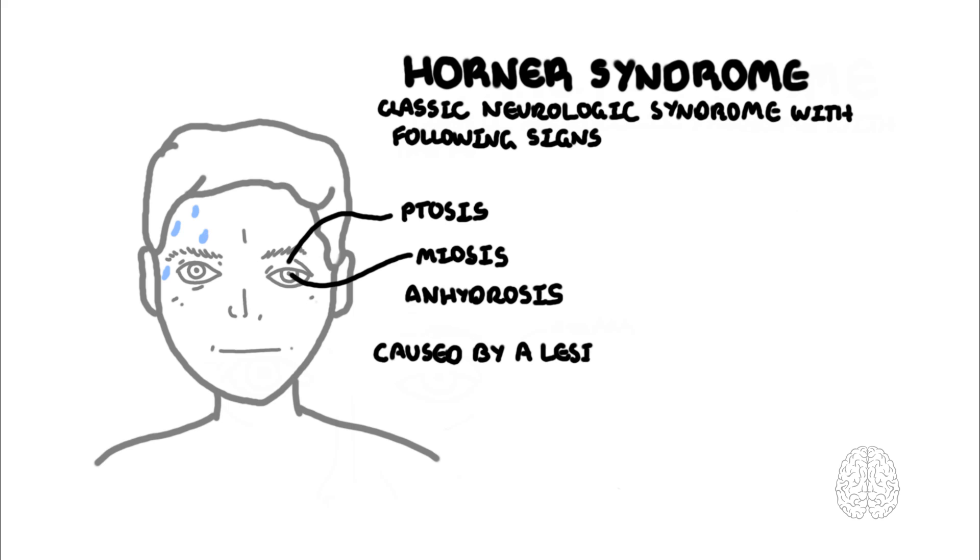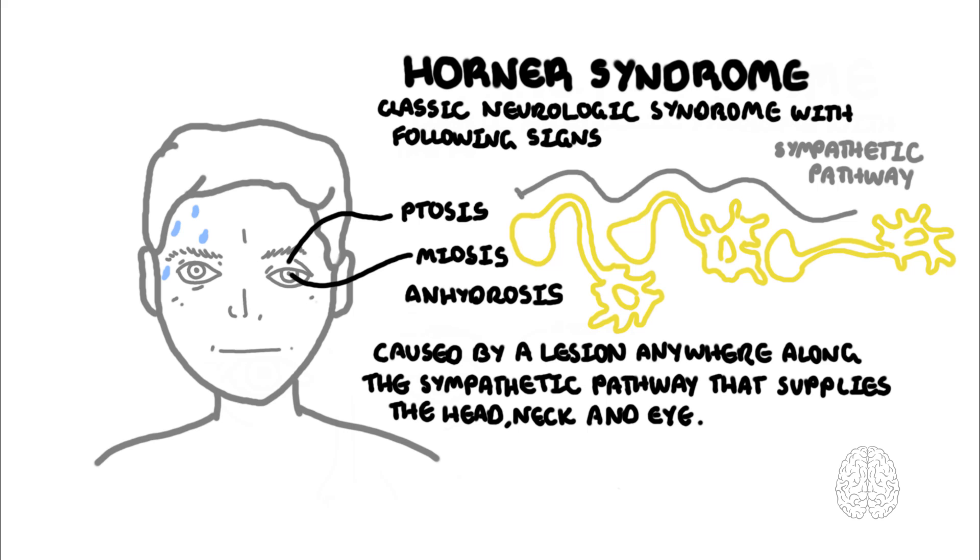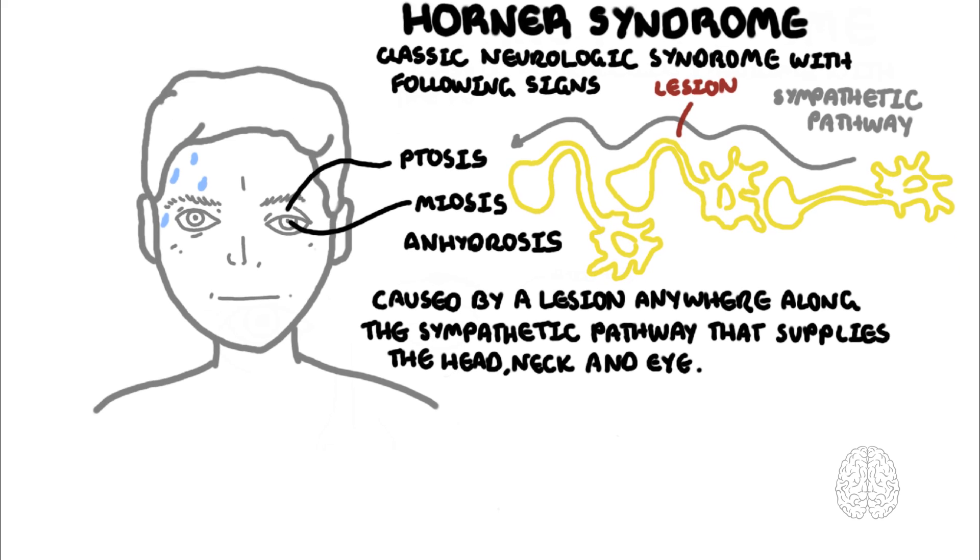Horner's syndrome is caused by a lesion anywhere along the sympathetic pathway that supplies the head, neck, and the eye. You have sympathetic nerves which supply the face, and the sympathetic nerves form what's called the sympathetic pathway. A lesion anywhere along this path can result in Horner's syndrome.